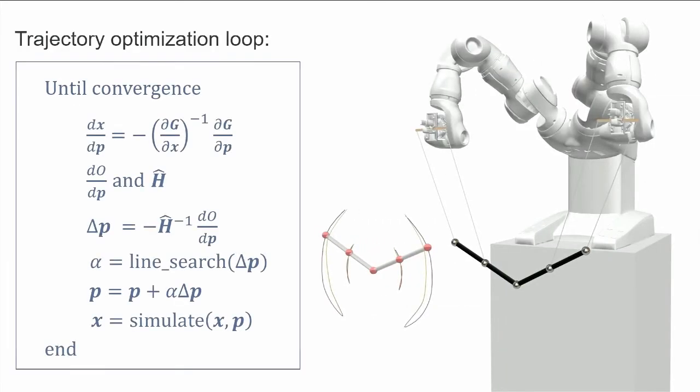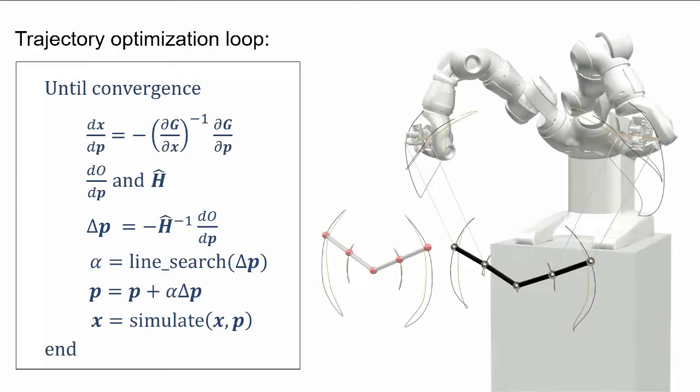Now, let's summarize a bit what we have seen so far by having a look at this trajectory optimization loop. We are solving the following algorithm until convergence. First of all, we compute the sensitivity using techniques from sensitivity analysis, and use this term to compute the gradient and the Hessian approximation. Then we can apply Newton's method to find a suitable search direction, and use this to find a good step size by applying backtracking line search. Then we update our control P, and finally compute the corresponding X for our new P by solving the forward simulation. You can see again how this looks like for our bird example.